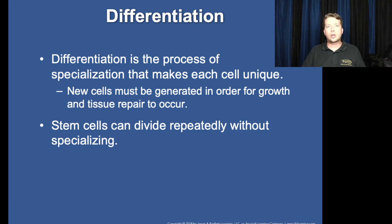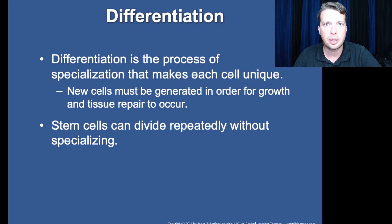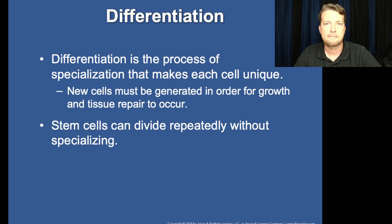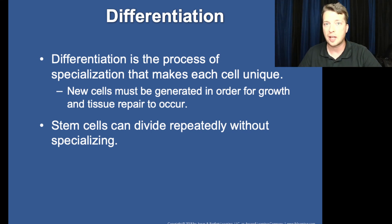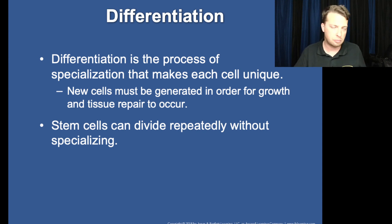This is one reason they encourage cord blood banking. If you bank a child's cord blood and that child later develops type one diabetes, they could potentially regrow the part of the pancreas necessary for insulin production, so they wouldn't have to be on insulin for the rest of their life. Stem cells from one child can also help other children in the family, although the further away genetically, the less specific the treatment can be.